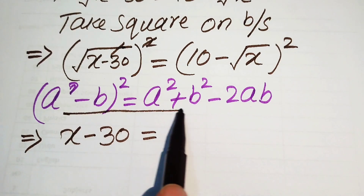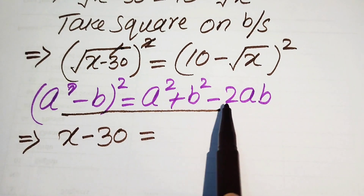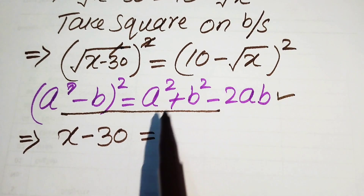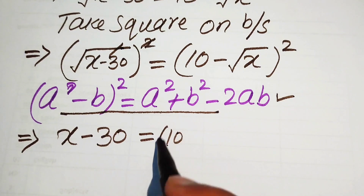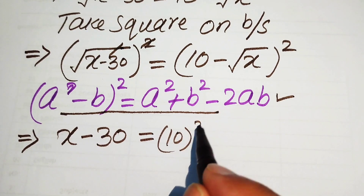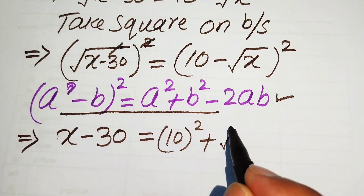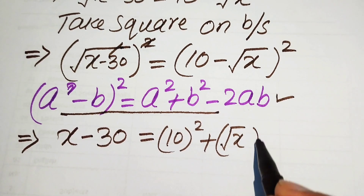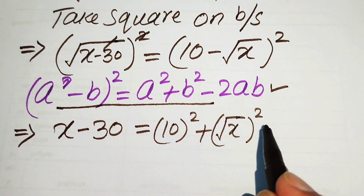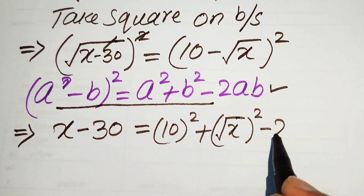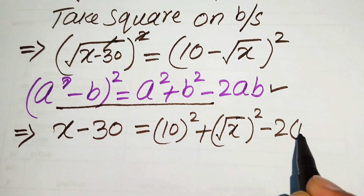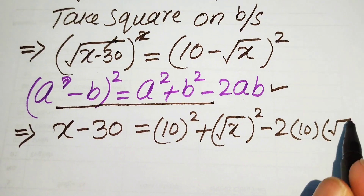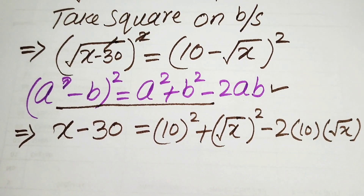Using this formula, we write the right hand side as: 10 squared plus (square root of x) whole squared, minus 2 times 10 times square root of x.